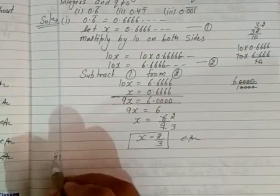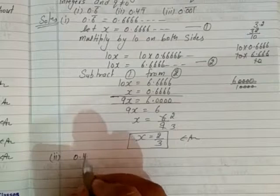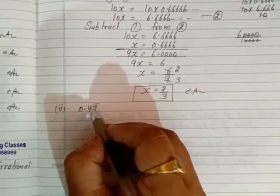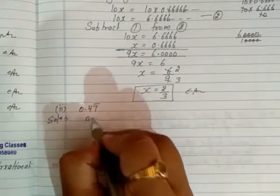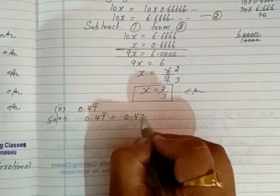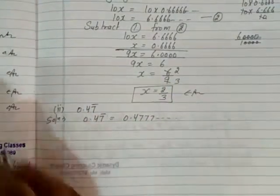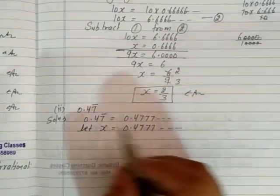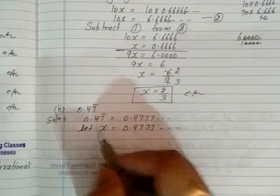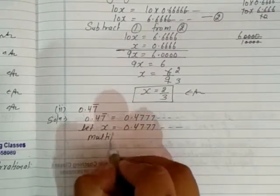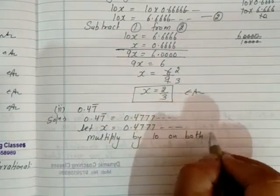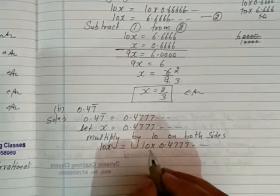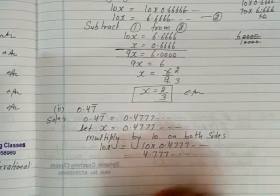Now the second part: 0.47 bar. Here the bar is only over the 7, meaning 1 digit repeats. So this means 0.4777... and so on. Let x equal to 0.4777... and so on. Since 1 digit is under the bar, we multiply by 10 on both sides. So 10x equals 10 multiplied by 0.4777..., which gives 4.7777... and so on.